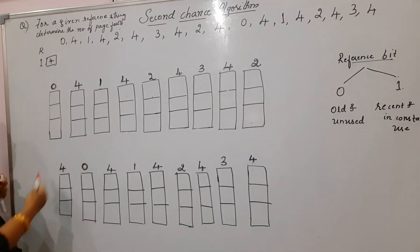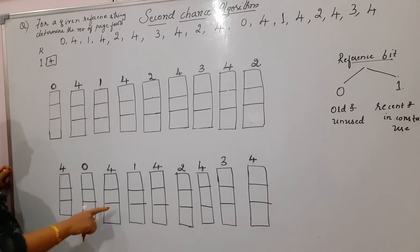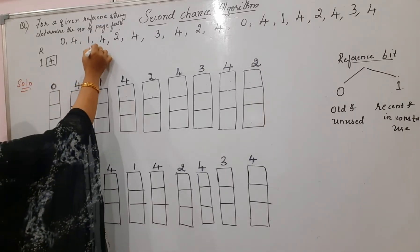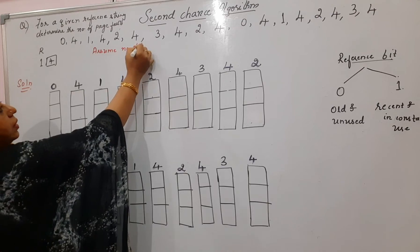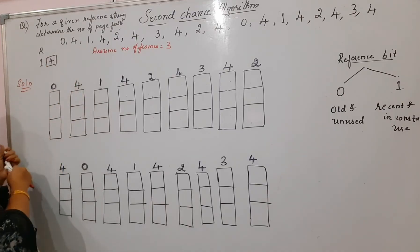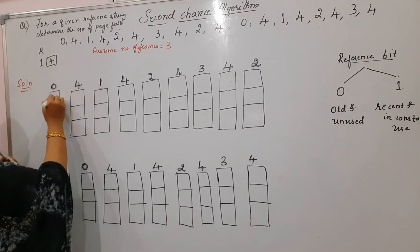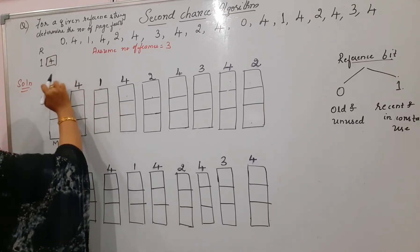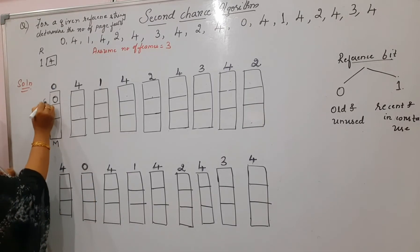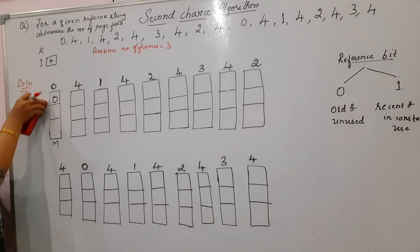We'll start the solution. There are 18 page references, so we sketch the physical memory 18 times. Assume number of frames equals three. Start with page 0 — there is a miss, so write 'M', place page 0 in the frame, and write its reference bit as zero. Initially all reference bits are zero. I'll use a distinct color to show the reference bit.